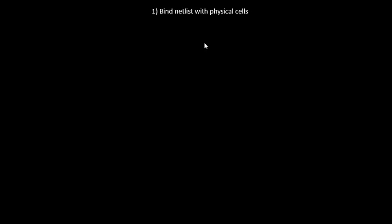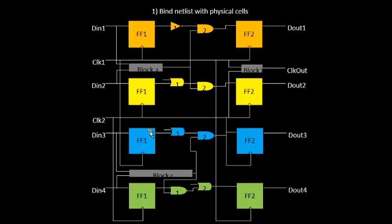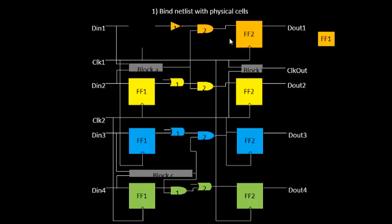Let's look into the placement and routing stage of the physical design flow. The first and very important step is to bind the netlist with the physical cells. This means we have a netlist with gates where the shape represents functionality — for example, an OR gate shape indicates OR functionality — but in reality we don't have those symbolic shapes. Instead, we have shapes like boxes.